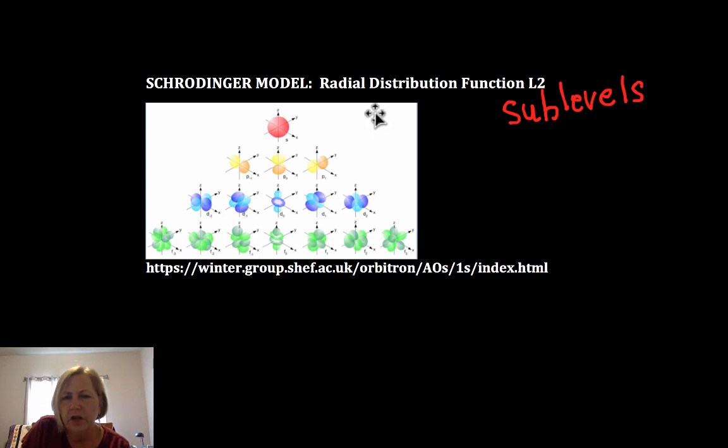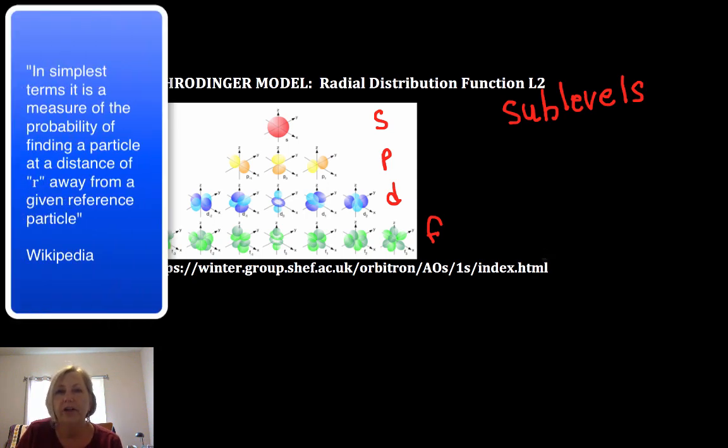In an earlier video, I talked about S, P, D, and F. So if you are in AP or IB chemistry, you should have seen these already in a prior class. And I want to talk a little bit more of these in terms of what's called the radial distribution function.